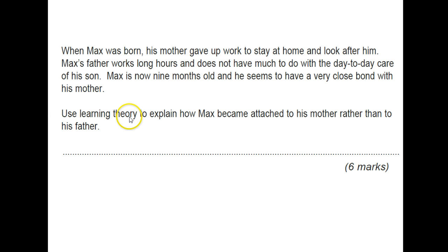Every time they ask you to use learning theory, you need to use the keywords such as classical conditioning. Max has learned via association. The mother was a neutral stimulus, the food was an unconditioned stimulus, and eventually the mother became the conditioned stimulus. You basically have to do a formula of classical conditioning. Then additionally, via operant conditioning, his mother is the secondary reinforcer where the food will be the primary reinforcer. Therefore, Max seeks out his mother in order to get the primary reinforcer, which is the milk.